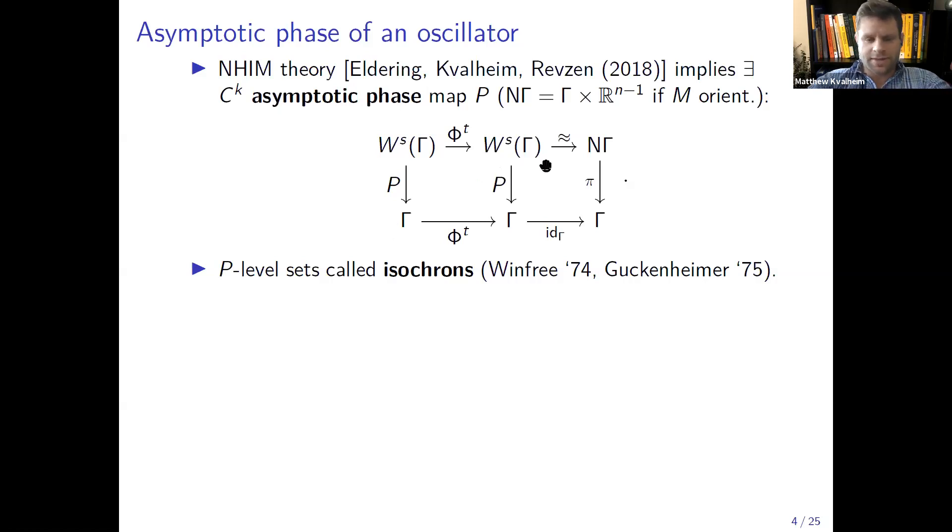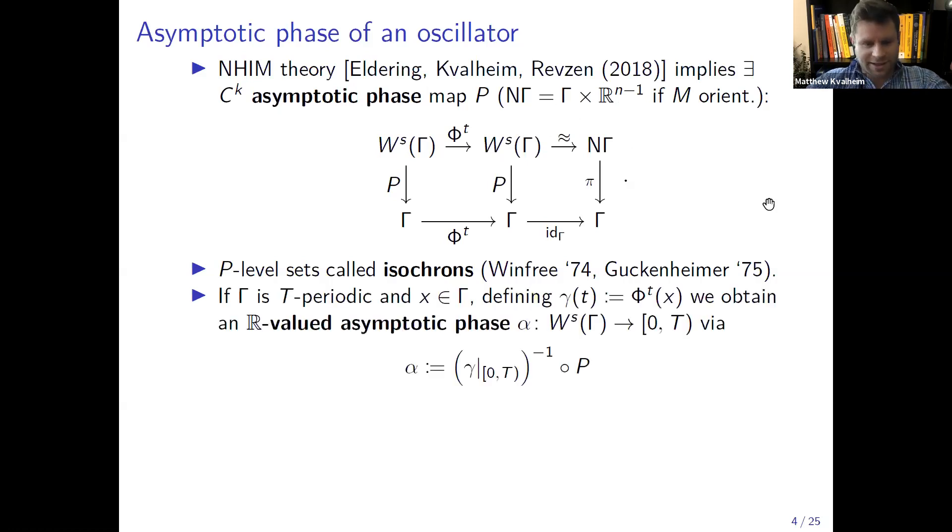In fact it's true that on the basin of attraction there's a global change of coordinates valid everywhere which straightens out the isochrones into an object which after a change of coordinates is just the normal bundle of γ. Or if the state space is orientable, the entire basin of attraction is diffeomorphic to the product of γ with the Euclidean space in such a way that isochrones just get sent to copies of Rn minus one. From this formulation you can kind of churn out all the other definitions of phase.